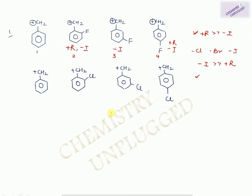For fluorine at the meta position (structure 3), only minus I effect operates, so it will be least stable. Structure 1 with no fluorine is next. For ortho (2) and para (4) positions, both have plus R effect, but resonance effect is stronger at para than ortho. Additionally, at ortho position the inductive effect also acts since it is close to the positive charge and inductive effect is governed by distance.